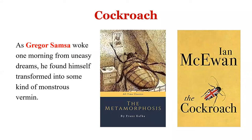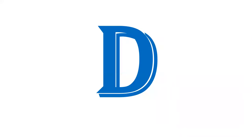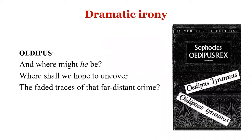D is for Dramatic Irony — a situation in a play where the audience knows more about a particular situation than the characters do. The classic example is the Greek playwright Sophocles' Oedipus Rex — also called Oedipus Tyrannus. Oedipus kills his father and unknowingly marries his mother. He is ruling Thebes, which is struck with plague. The oracle says Thebes suffers because a murderer — the killer of former king Laius — is yet to be brought to justice.